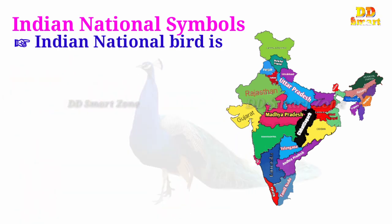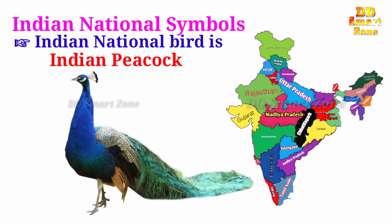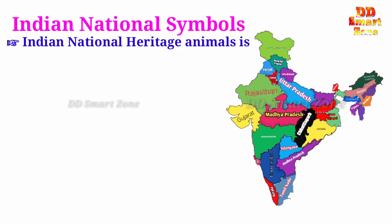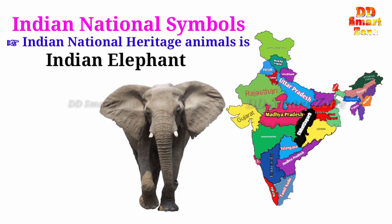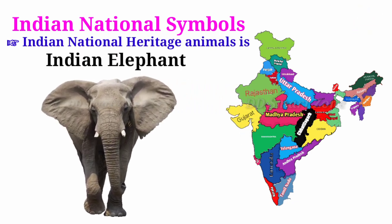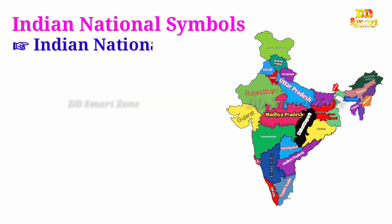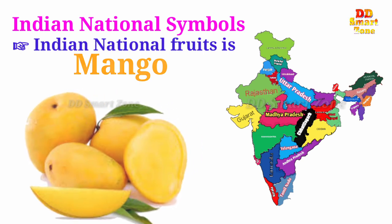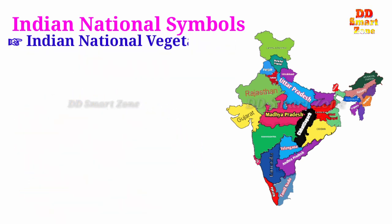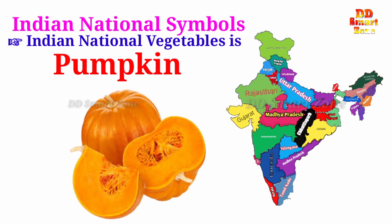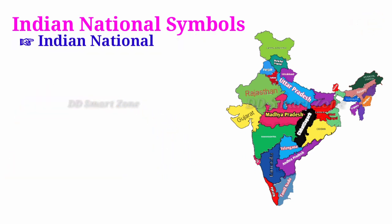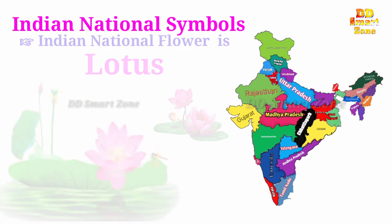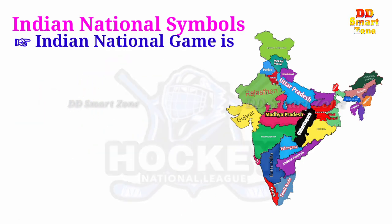Indian national bird is Indian Peacock. Indian national heritage animal is Indian Elephant. Indian national fruit is Mango. Indian national vegetable is Pumpkin. Indian national flower is Lotus. Indian national game is Hockey.